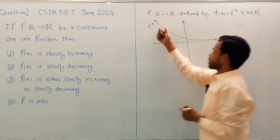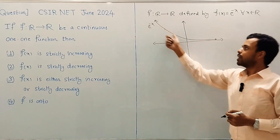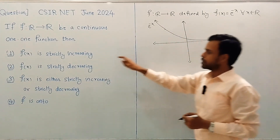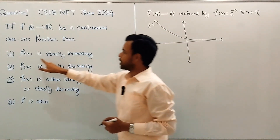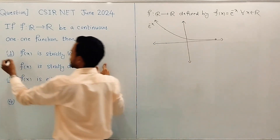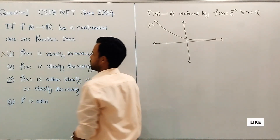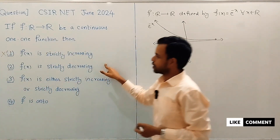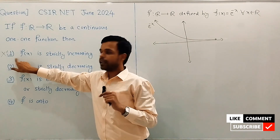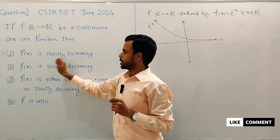But from its graph, it is clear that the function is strictly decreasing. Option 1 says f(x) is strictly increasing, so option 1 is discarded — it is not necessarily true.